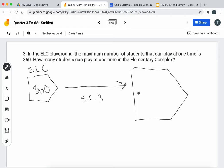So 360 times 3 is equal to 1080. So 1080 students can play on this playground at one time for the elementary complex.